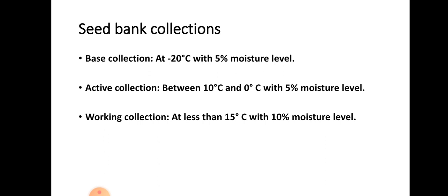Inside seed banks there are several collections: base collections, active collections, and working collections. In the base collections, germplasm accessions are stored at minus 20 degrees Celsius with 5% moisture level. These are not disturbed at all — regeneration is done only after 5 to 10 years if the germination percentage falls below 95%.